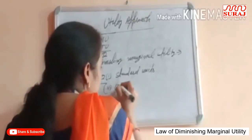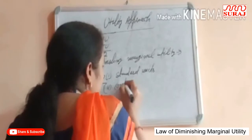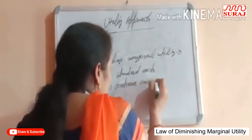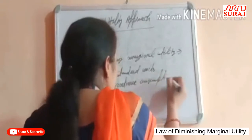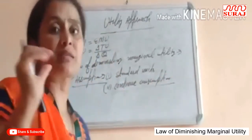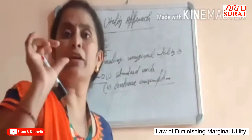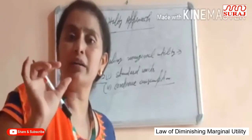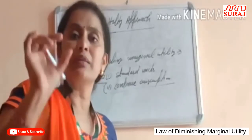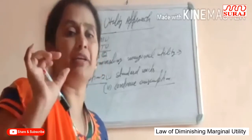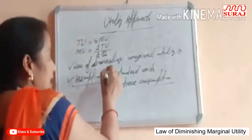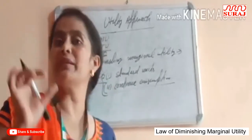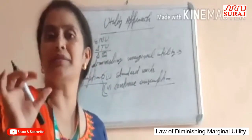The second assumption says continuous consumption. It means when the consumer starts consuming any commodity, there is no gap between the consumption — the consumption would be continued. These are the two assumptions on which the law of diminishing marginal utility is based.